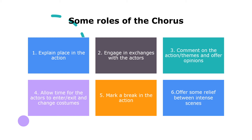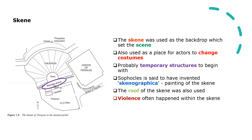Moving behind the orchestra, we meet the skene — from which we get the English word 'scene.' The skene was the building used as a backdrop for the play and as a place for actors to change costumes between roles. Originally the skene was made of wood, which is why none survive today. Sophocles is said to have invented skiagraphia — painting the skene to make it appear to be a particular building.